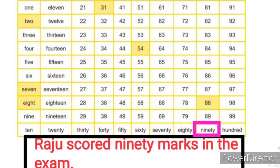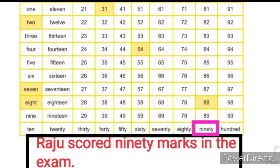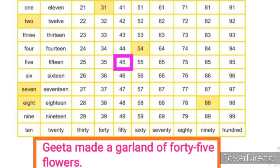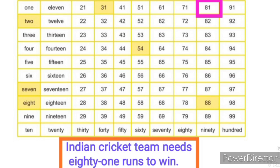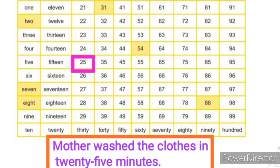Next example: 90 — 'Raju scored 90 marks in the exam.' Raju ne parikshet 90 gun milavle. Next example: 45 — 'Geetha made a garland of 45 flowers.' Geetha ne 45 phulanche haar banaavla. Next number: 81 — 'Indian cricket team needs 81 runs to win.' Next example: 25 — 'Mother washed the clothes in 25 minutes.'